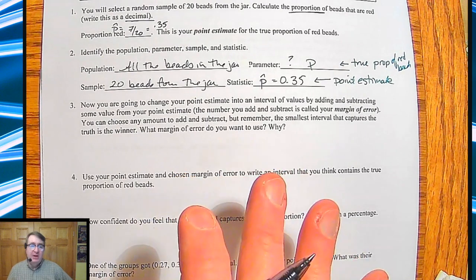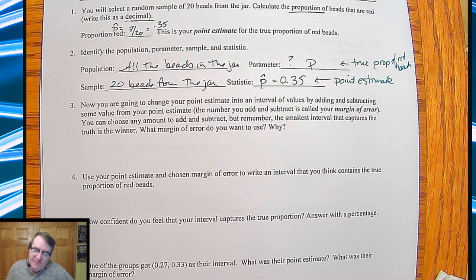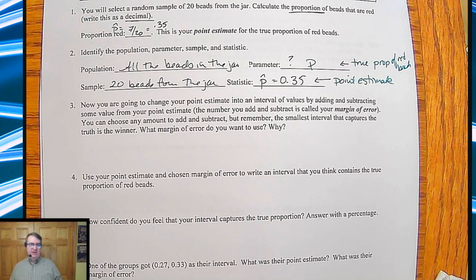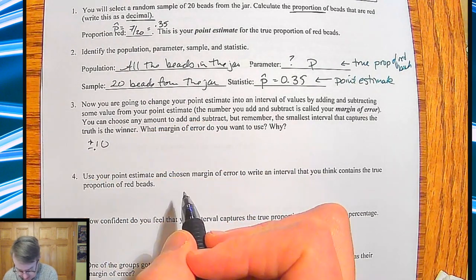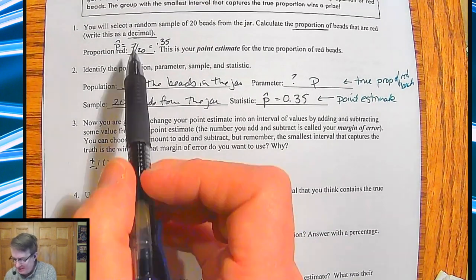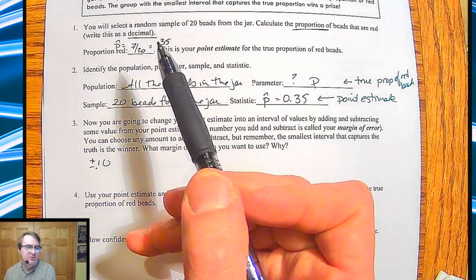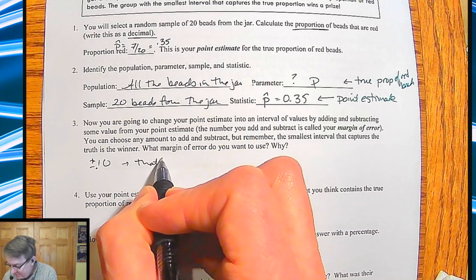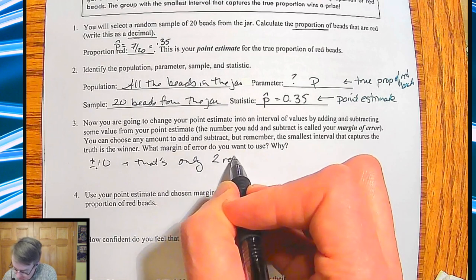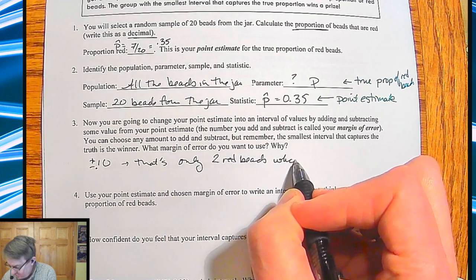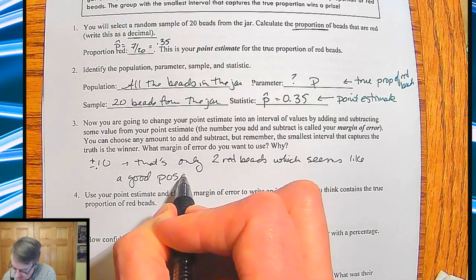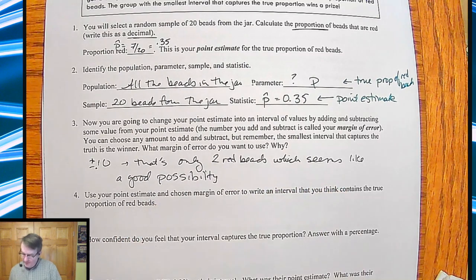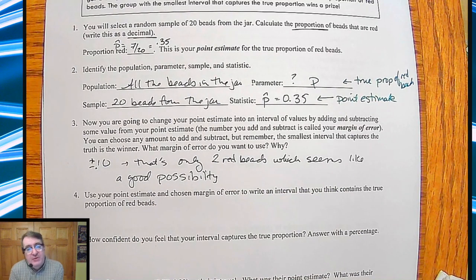Now, if you looked at anything from recent elections and stuff, sometimes they'll say it's like, so-and-so has 35% approval rating plus or minus 5%. That plus or minus 5% is the margin of error that we're talking about. So, think about what would be appropriate to use. Let's just, for sake of ease, say we're going to go plus or minus 10%, 0.10. Why does that make sense? Well, how many red beads is 10% going to be? If we get 7 out of 20, if we go 2 above and 2 below, that would give us between 5 to 9. So, that would be about 10%. We're going to say that's only two red beads, which seems good.